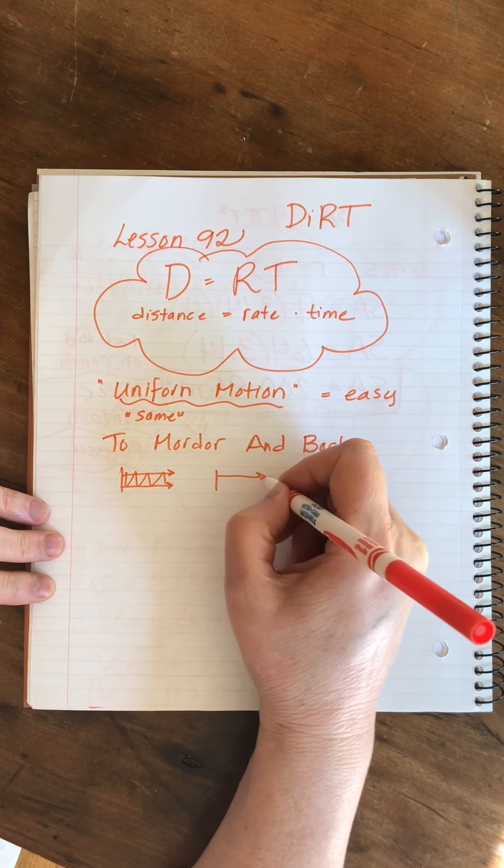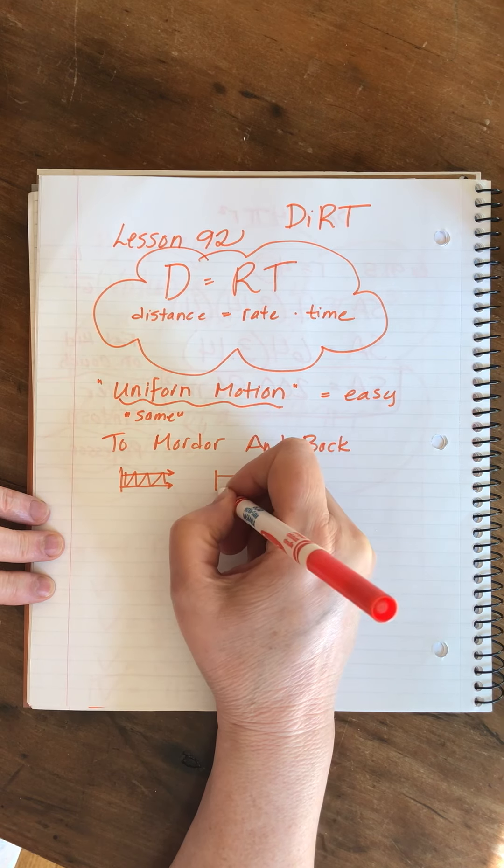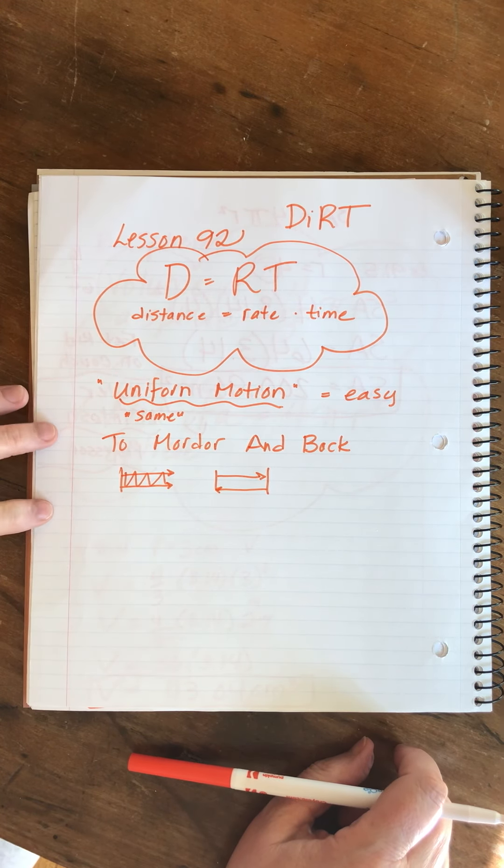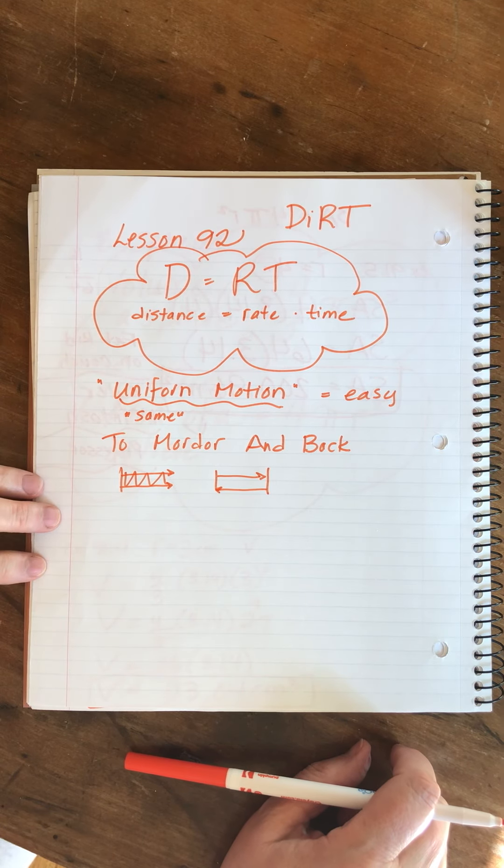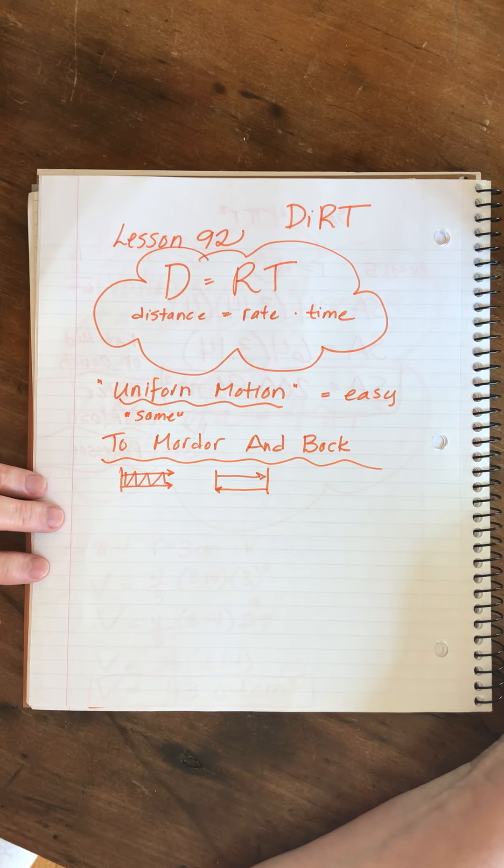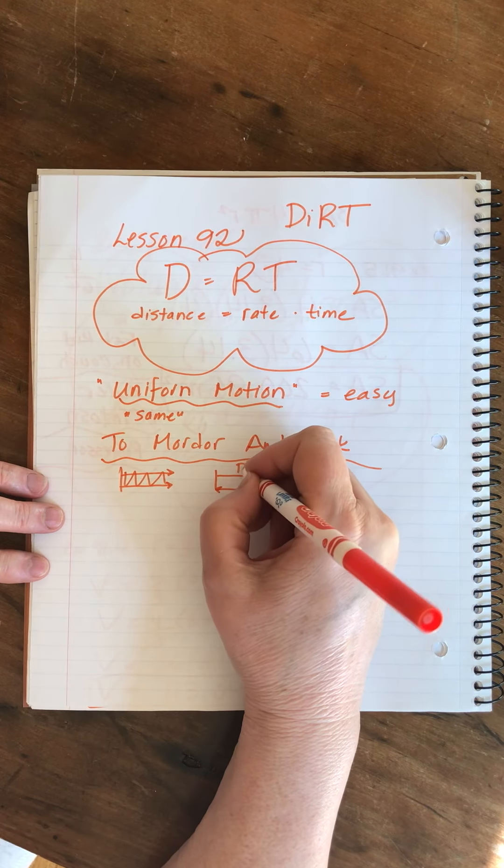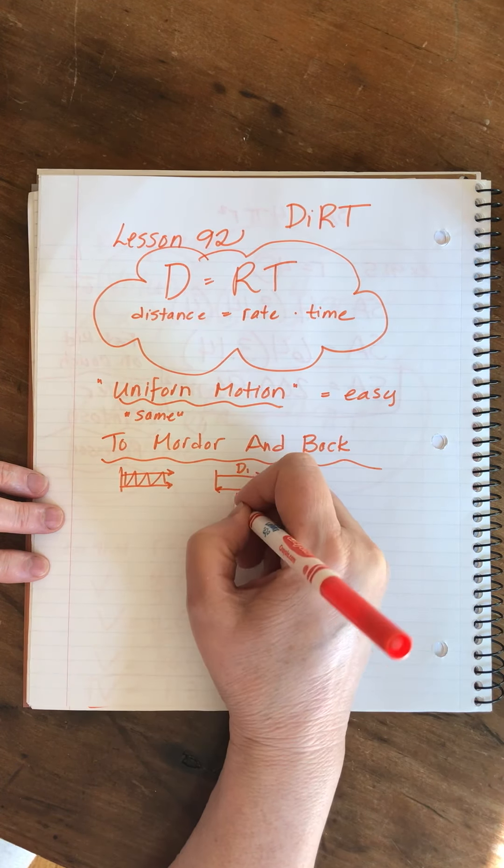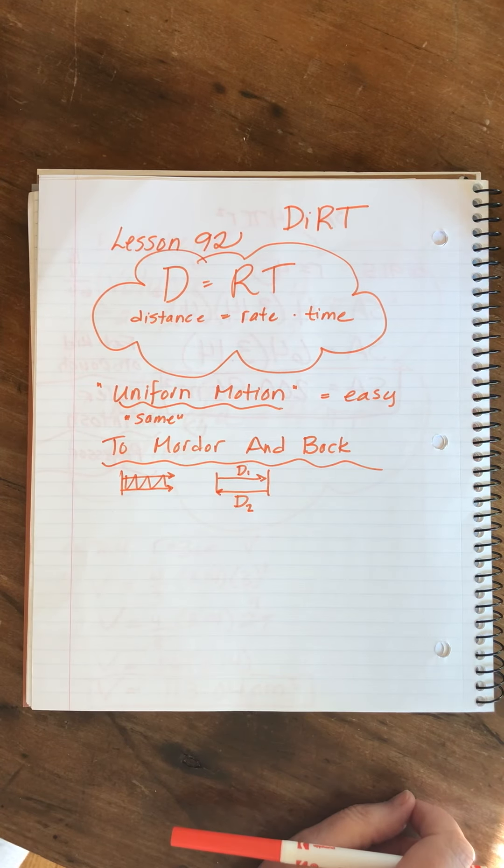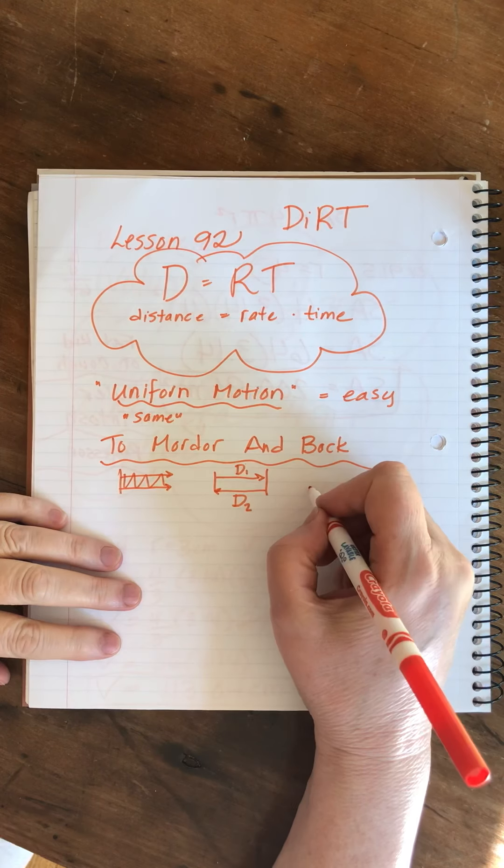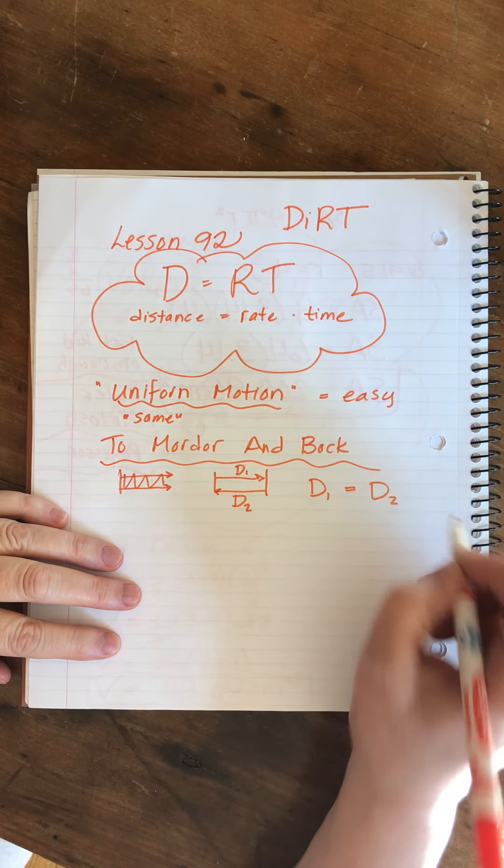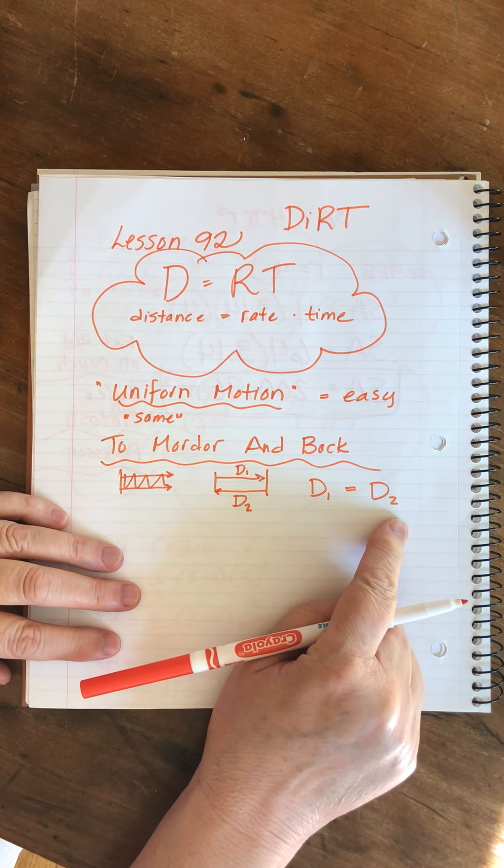So, they go all the way to Mordor and then they go all the way back to the shire. Right? That is the trip they took. So, if we simplify this to take out any shortcuts or alternative routes, the distance that they traveled to Mordor is the same as the distance that they traveled back. The first distance is equal to the same distance. And so, we can say as a very simple starting equation that the first distance is equal to the second distance.